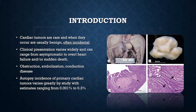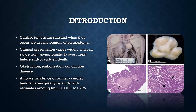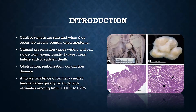Cardiac tumors are neoplasms arising either from the heart itself or from other organs that metastasize to the heart. A major takeaway is that metastases to the heart are much, much more common than primary malignancies of the heart. Benign cardiac tumors are often discovered incidentally — on autopsy or incidentally on other imaging like echo, CT scan, or a CT abdomen that incidentally captures a view of the heart in someone otherwise asymptomatic.